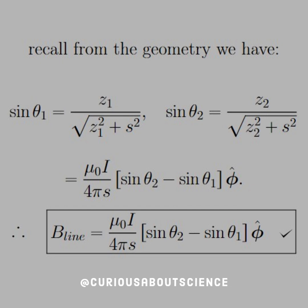Thus, after the substitution, we see that this actually is the magnetic field of the line: mu-naught I over 4 pi s times sine theta 2 minus sine theta 1 in the phi-hat direction. Confirmed.